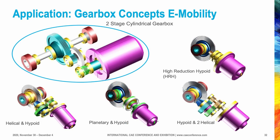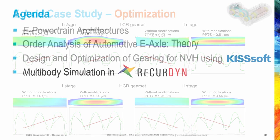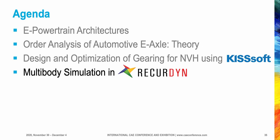Among several concepts for e-mobility, we chose as a case study the two-stage cylindrical gearbox. The design and optimization of the transmission was performed in Keysoft. We compared two different gear sets: the first with low contact ratio and the second with high contact ratio. Simulations were carried out to evaluate the performance improvement of high contact ratio gears regarding peak-to-peak transmission error and gear meshing and bearing forces, followed by multi-body simulation in Recurdyne.